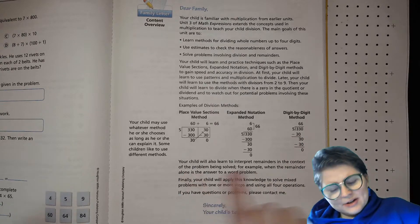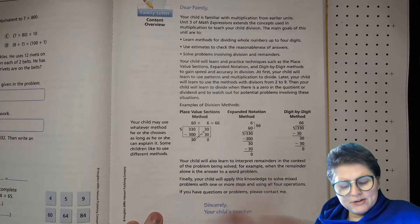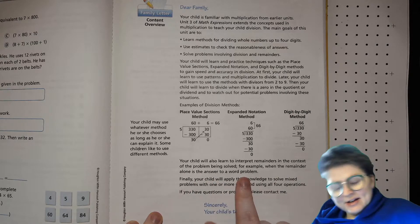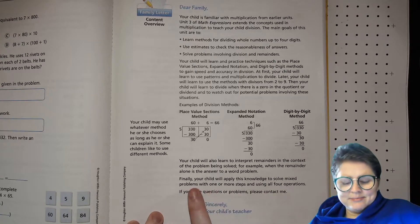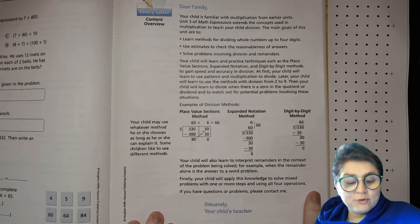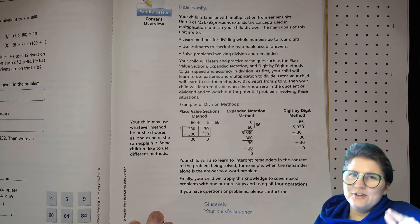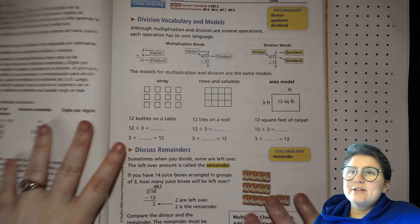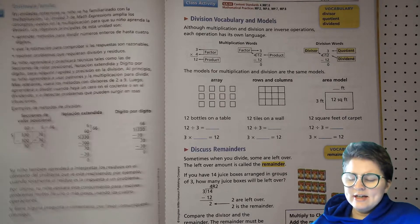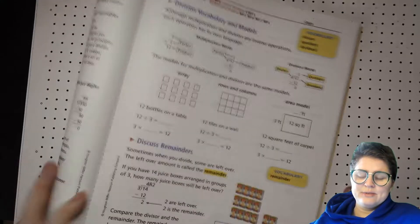Your child will also learn to interpret remainders in the context of the problem being solved. For example, when the remainder alone is the answer to a word problem, like how many things would be left over after dividing something. Finally, your child will apply this knowledge to solve mixed problems with one or more steps using all four operations. If you have any questions, call your teacher or email them. Same letters here in Spanish. So if your parents speak Spanish, they can read that side. You can go ahead and rip this out and give it to them and then continue the video once you're done with that.